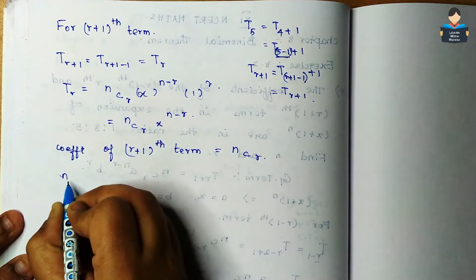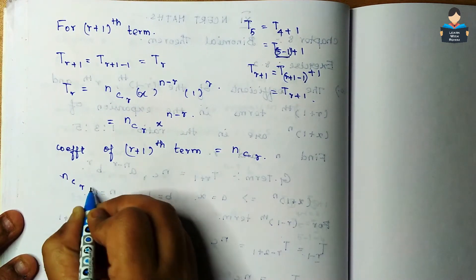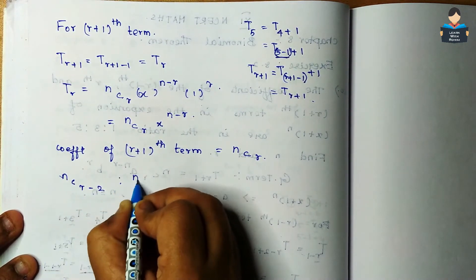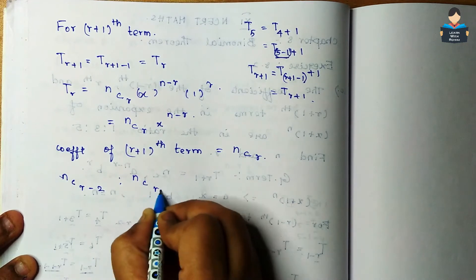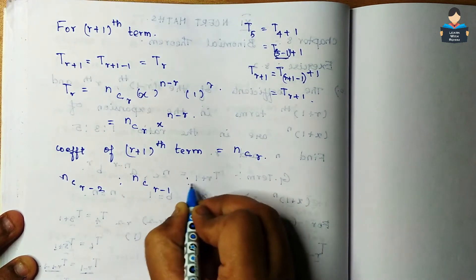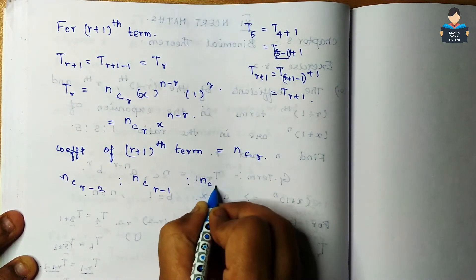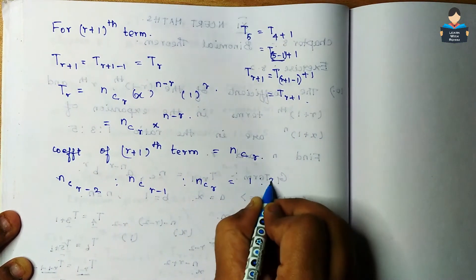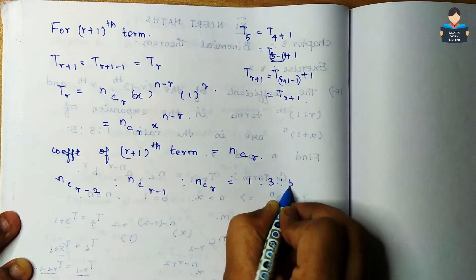Now the ratios of the three coefficients: nC(r-2) : nC(r-1) : nCr = 1 : 3 : 5.